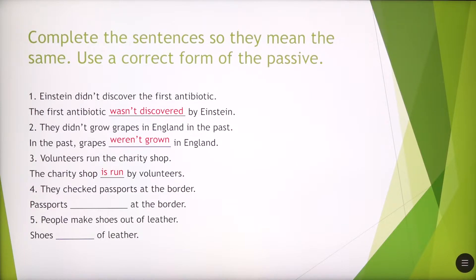Number four, they checked passports at the border. So this implies that passports were checked at the border. Number five, people make shoes out of leather. So shoes are made of leather. The passive voice is another form of expressing something.